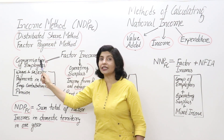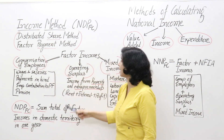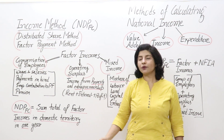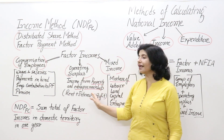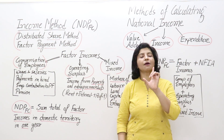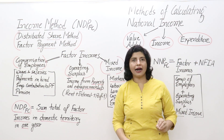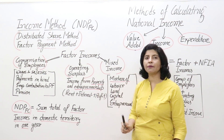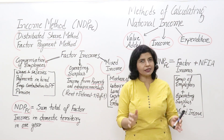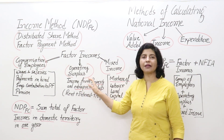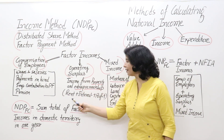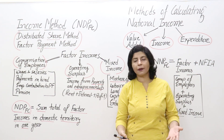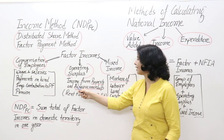Operating surplus is income from property and entrepreneurship. Income from property means if you have a house and receive rent, that is income from property. Entrepreneurship income means profit from running a business. So operating surplus includes rent from property, interest from lending capital to others, and profit from any business.